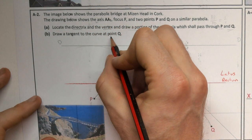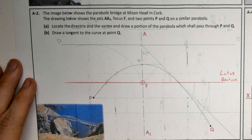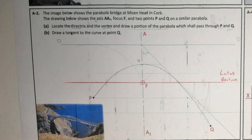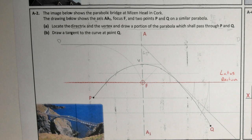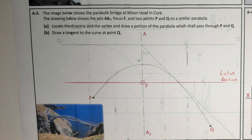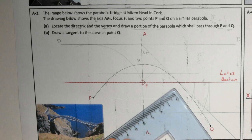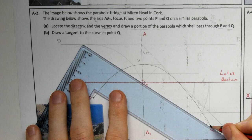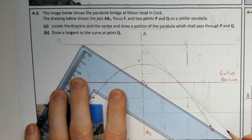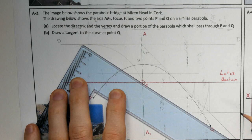Draw a tangent to the curve at point Q. I like to use the method that is common to all conics. It works for parabola, hyperbola, or an ellipse. So I join F back to the point of contact. Actually, highlight this construction.